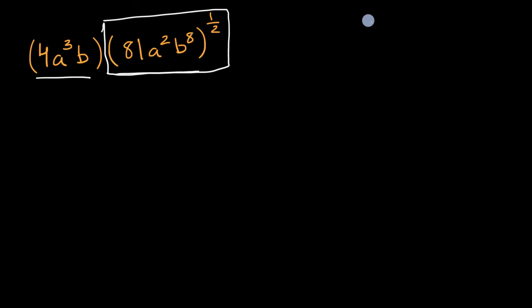Well, we've seen that exponent property before. If I have a times b, and all of that is raised to the nth power, that's the same thing as a to the n times b to the n. So let's rewrite this part like that. I'll just rewrite the first part. So we have 4a³b, and then I will do this part in blue, just to make it look a little different.